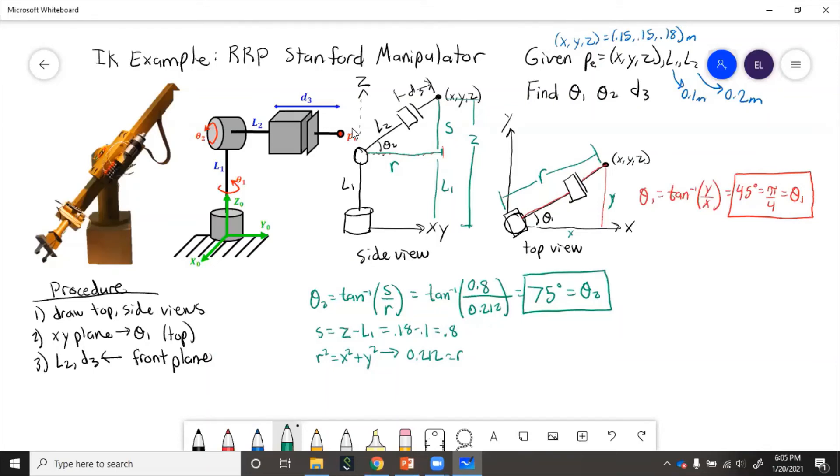Now finally, we have to get d3. From looking at this, we can use Pythagorean theorem. This distance, L2 plus d3 squared, has to equal s squared plus r squared. If we square root both sides, L2 plus d3 equals square root of s squared plus r squared. So d3 equals square root of s squared plus r squared minus L2. Plugging in numbers, square root of 0.8 squared plus 0.212 squared minus L2, which is 0.2. When you do this calculation, make sure that the L2 is still out of the square root. Then you get d3 equals 0.628 meters.